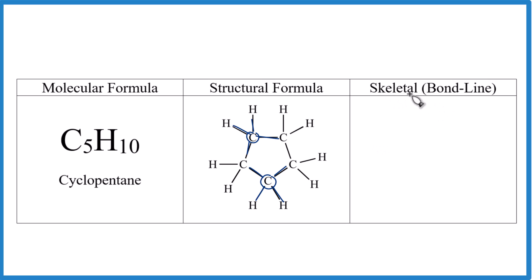If we want to draw the skeletal or bond line formula, we're just going to put lines between the carbons. One, two, three, four, five. And this is going to be the skeletal structure. And it'll look like this.